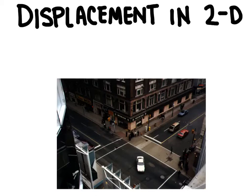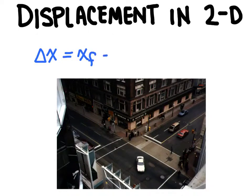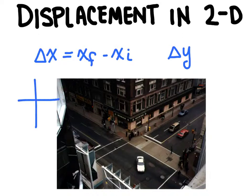In this video we're going to talk about displacement in two dimensions. Displacement can be defined as the change of position of an object. We usually use the symbol delta x to describe that change in position — that means the final position minus the initial position. We could also say delta y, since we're moving in two dimensions and would be concerned with the xy axis.